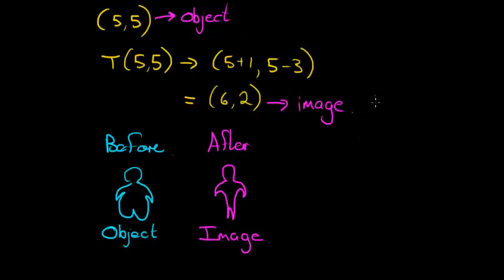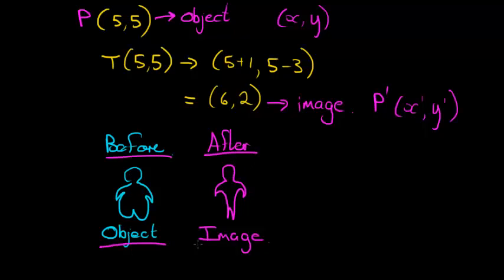This is the object and this is the image. Usually we would refer to, if this was a point P, we would talk of the image as P'. Or if this was the coordinate, the object's coordinate, usually the image would be (x', y'). That's usually how we just refer to the object and the image. But it might differ from one textbook to another, or from one author to another. As long as you get that the before coordinate is called the object, the after coordinate is called the image.